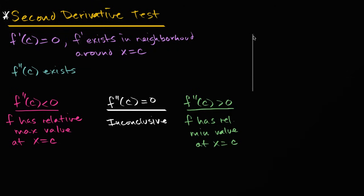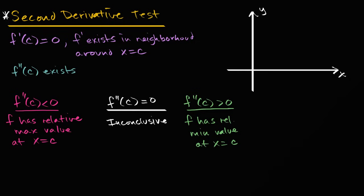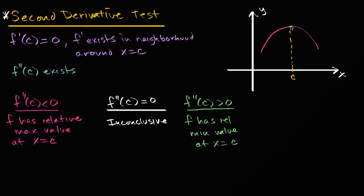Let me draw some axes here. So that's my y-axis, and this is my x-axis. Let's say I have a function that has a relative maximum value at x equals c — something that looks like that. And x equals c is right over there, so that's the point (c, f(c)). We visually see that we have a local maximum point there. We know that the slope of the tangent line, at least the way I've drawn it, is equal to zero. So f prime of c is equal to zero.